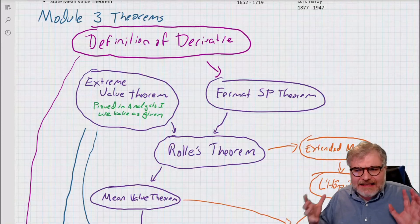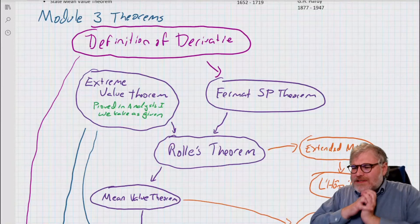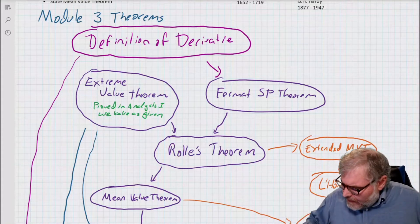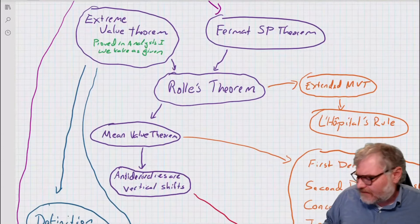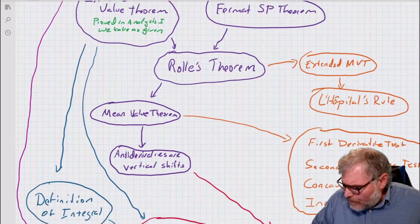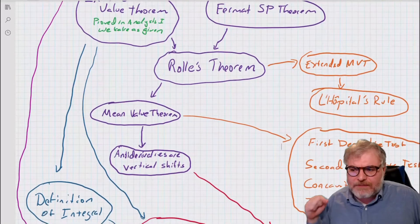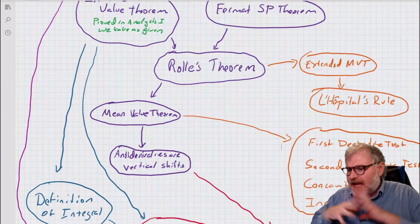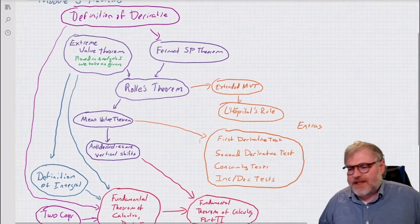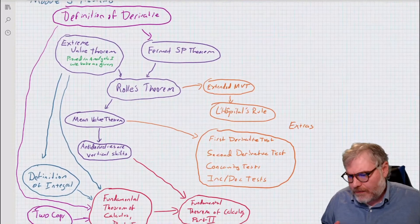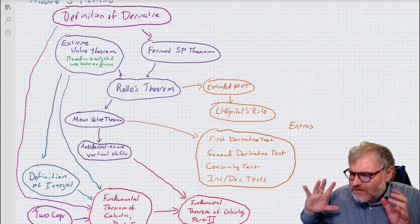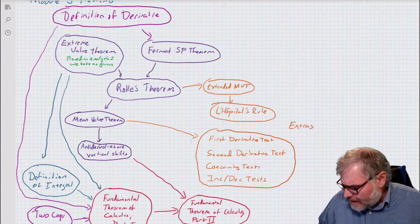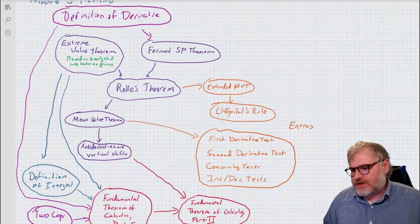There's a lot in this section. Today we're going to do Rolle's theorem, and then Rolle's theorem you use to prove a lot of things. You use it to prove L'Hôpital's rule, some extended Mean Value Theorem, and the important thing for us is we're going to use it to prove the Mean Value Theorem. Then we're going to use it to prove the anti-derivatives as vertical shifts. There are so many theorems here that I couldn't possibly cover all the proofs for them.